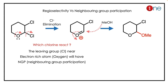The question is: which chlorine will react — the second or the third? The second chlorine will react, because it has neighboring group participation from oxygen. Oxygen has a lone pair and can donate, helping the chlorine leave. Chlorine is already a good leaving group, but this assistance makes it much better. So chlorine leaves, forming a cation, and then methanol attacks, giving methoxy substitution at the second position.